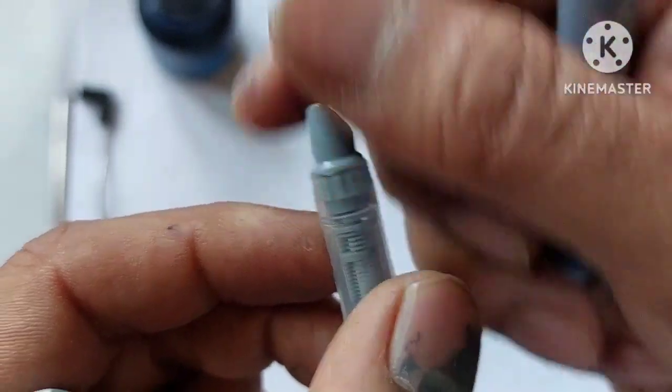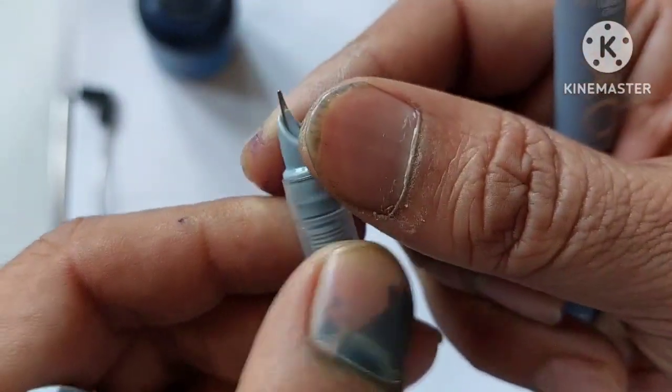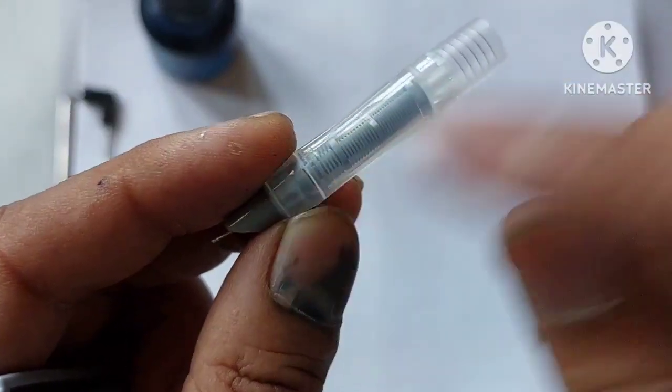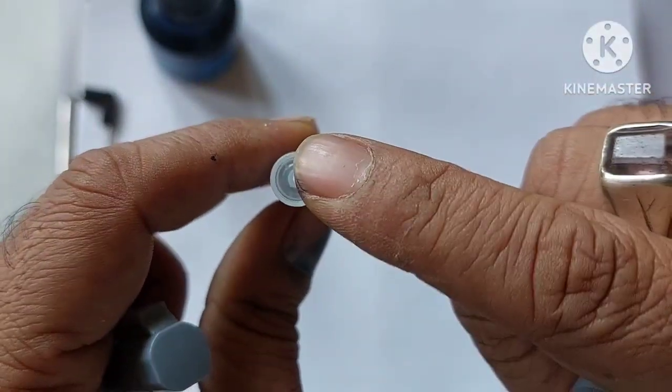This part can be removed and it can be inserted back. And there is a part over here, this is the feeder from where the ink flows once you insert the cartridge.